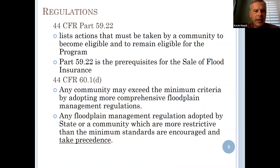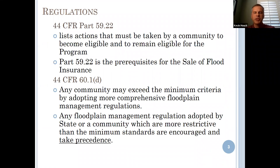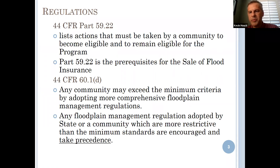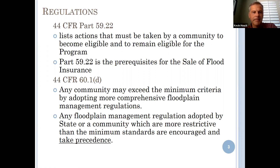We've gone over a lot of sections throughout the course over the last day and a half, but let me start with Part 44 of the Code of Federal Regulations. Part 59 lists actions that must be taken by the community to become eligible and remain eligible for the program and the prerequisites for the sale of flood insurance. The National Flood Insurance Program — NFIP — is essentially an agreement between the federal government and a local community, whereby the local community agrees to enact a floodplain ordinance in exchange for FEMA making NFIP flood insurance available.